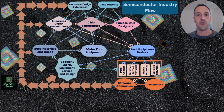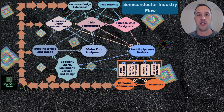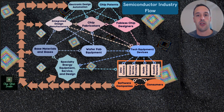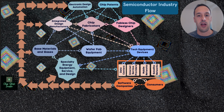Which brings us to our semiconductor industry flowchart, which we made to illustrate how chip production happens, how the different steps in the process of developing a chip happen, how the different companies relate to and interact with each other, and ultimately how money flows through the semiconductor industry — which will help you decide which stocks you want to invest in. So let me break it down here.